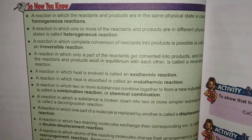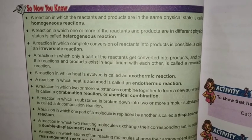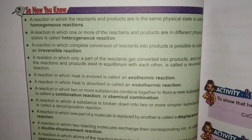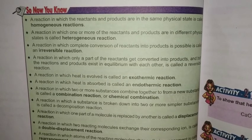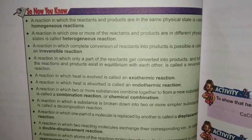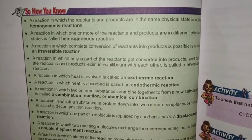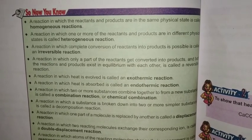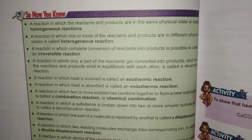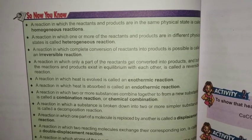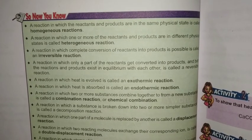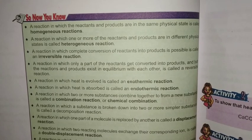On the basis of heat, reactions are of two types: exothermic and endothermic. A reaction where heat is evolved is called an exothermic reaction. We have seen different examples. Then we discussed combination reactions and decomposition reactions.